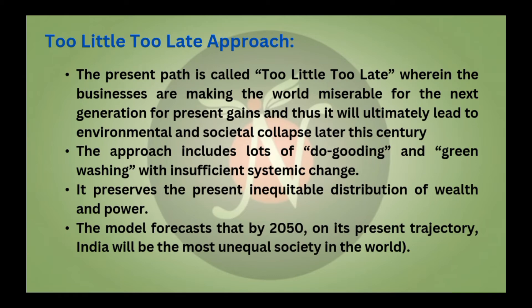In the Too Little Too Late approach, the present path we are following has businesses making the world miserable for the next generation for present gain, and will ultimately lead to environmental and societal collapse later this century. This approach includes lots of do-gooding and greenwashing with insufficient systematic change. It preserves the present inequitable distribution of wealth and power. The model forecasts that by 2050, on its present trajectory, India will be the most unequal society in the world.